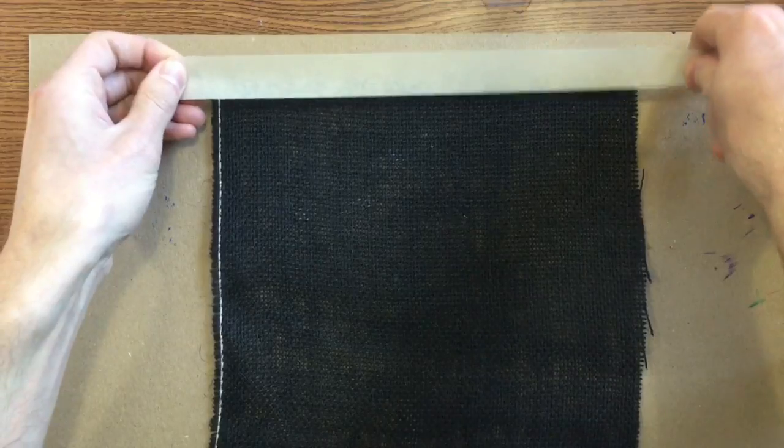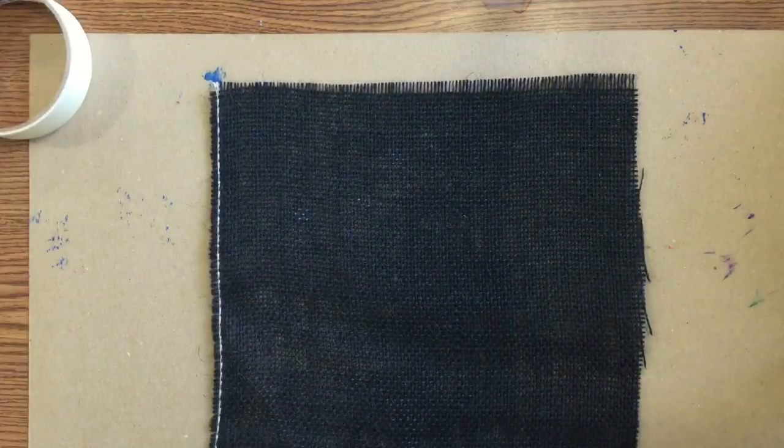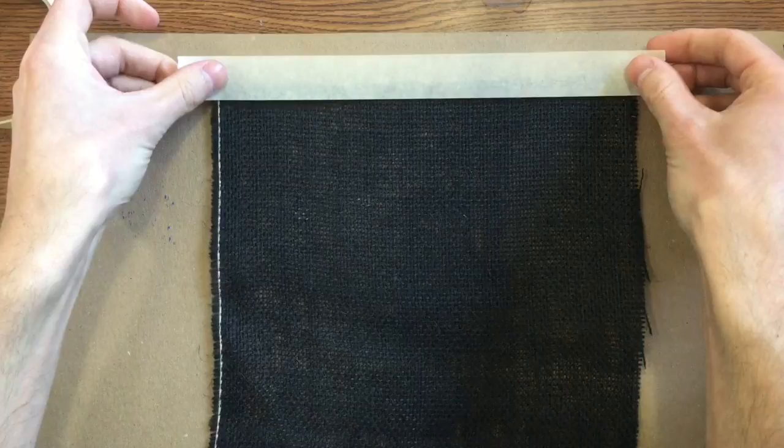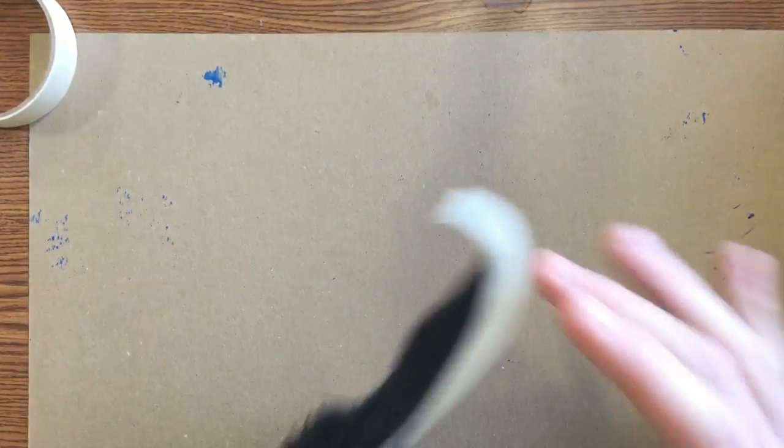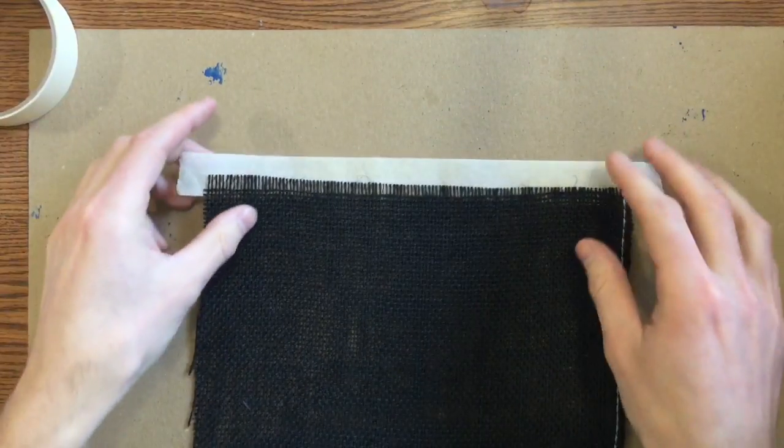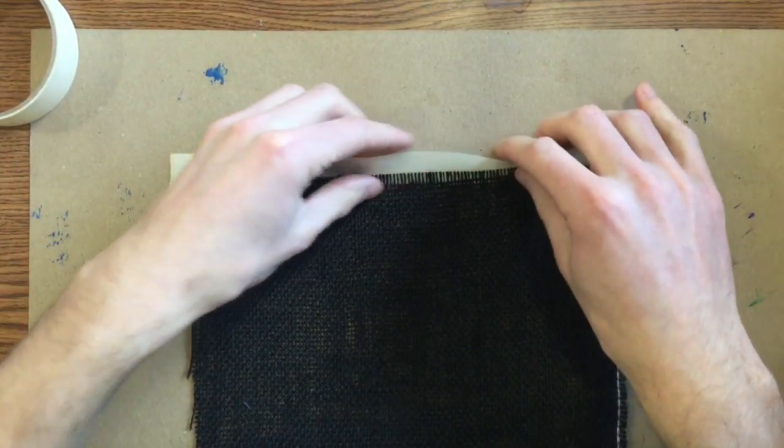So I'm going to get a piece of tape that's the length of it. I'm going to put half of it on my burlap. I'm going to fold the other half over.